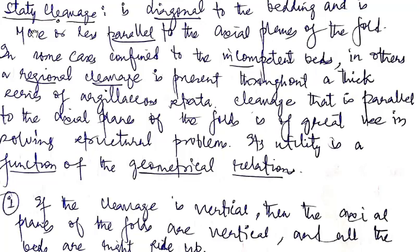Slaty cleavage is diagonal to the bedding — they are at an acute angle to the bedding — and is more or less parallel to the axial planes of the fold. In some cases, they are confined to incompetent bands; in other cases, there are regional cleavages which cover throughout the thickness of argillaceous strata.